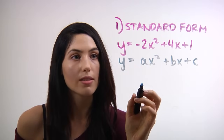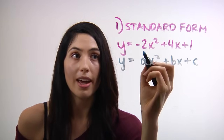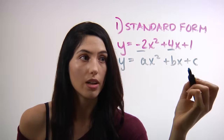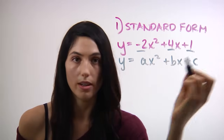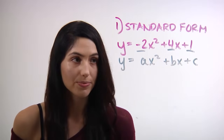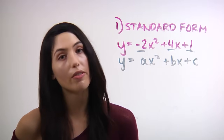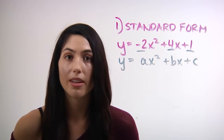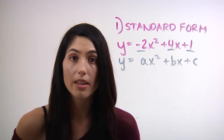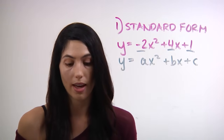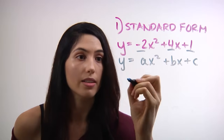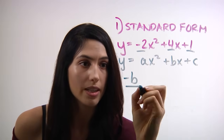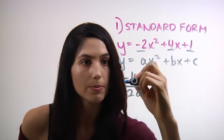So in your case, your a is negative 2, your b is 4, and your c is 1. Now for the vertex, all you need to remember is the formula negative b over 2a. That's really all you need — negative b over 2a.